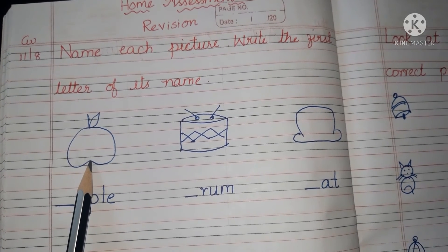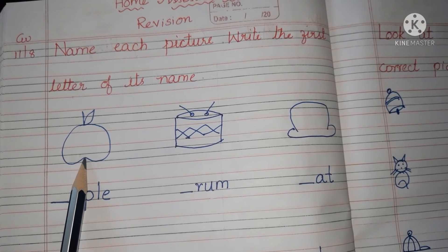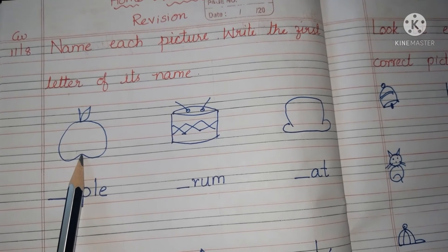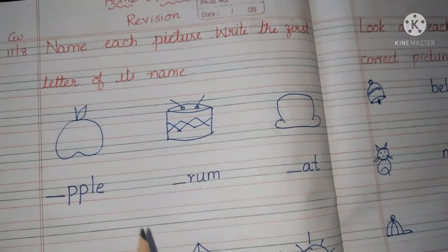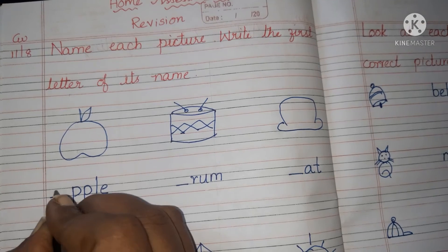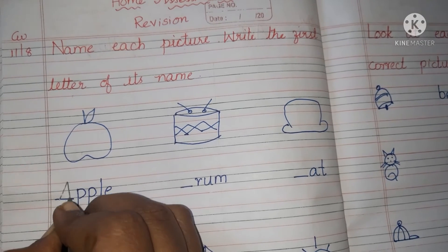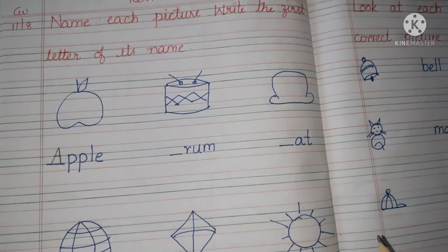See what is this picture? An apple. So what is the spelling of an apple? A-P-P-L-E, apple. So what is the missing letter children? A. So write here A.